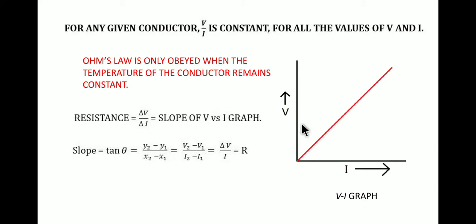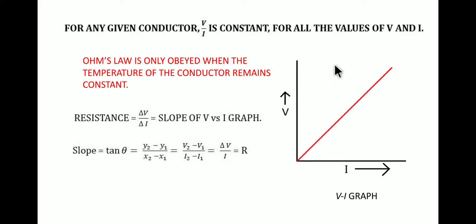If we replace y₂ − y₁ with V₂ − V₁ (voltage at two given points) and x₂ − x₁ with I₂ − I₁ (current), then the change in voltage ΔV divided by change in current ΔI gives resistance, since V by I equals resistance. So the slope of the V-I graph gives you the resistance. Greater the slope, greater will be the resistance of the conductor.